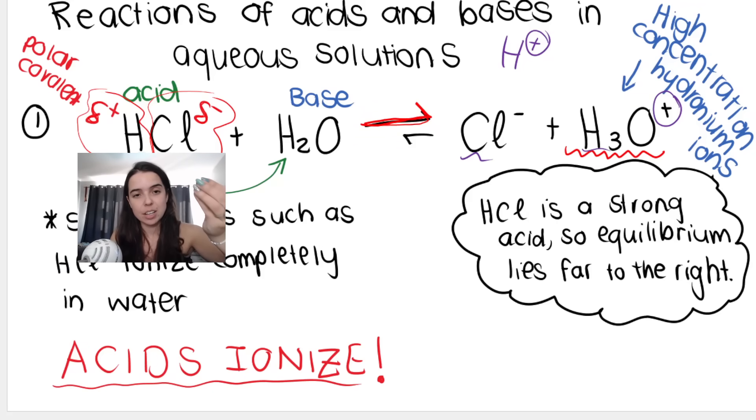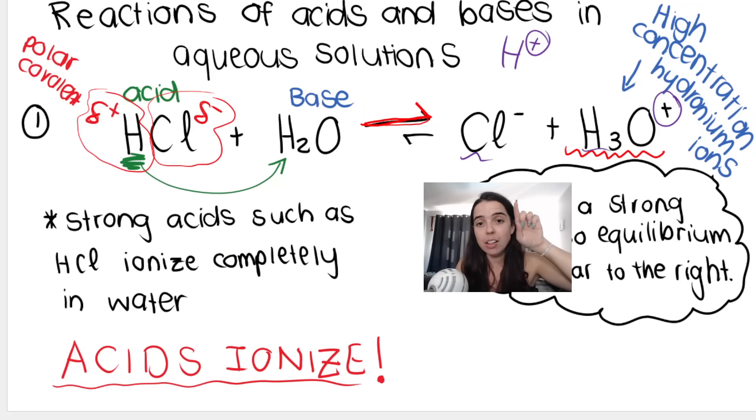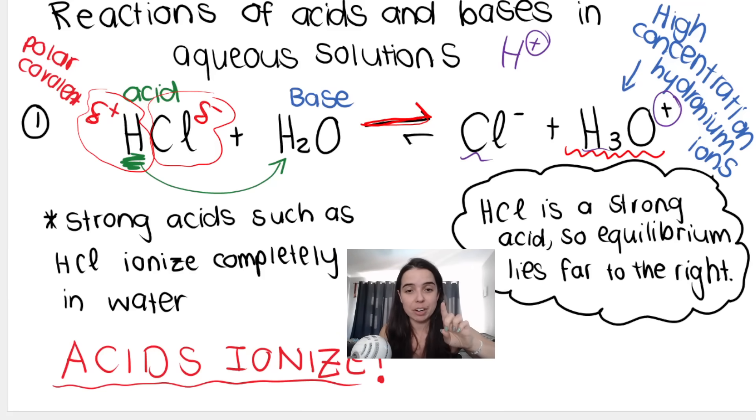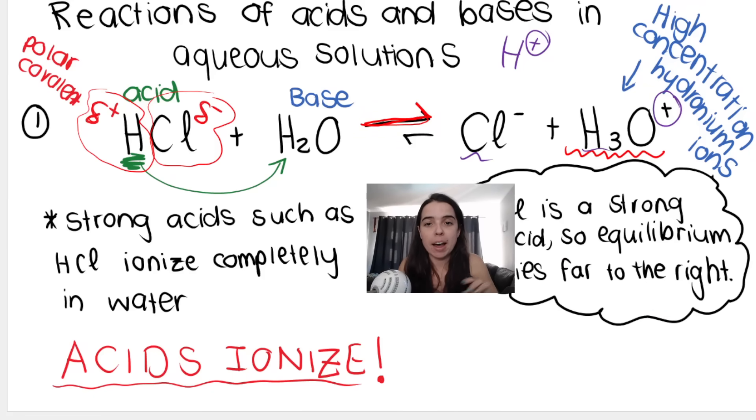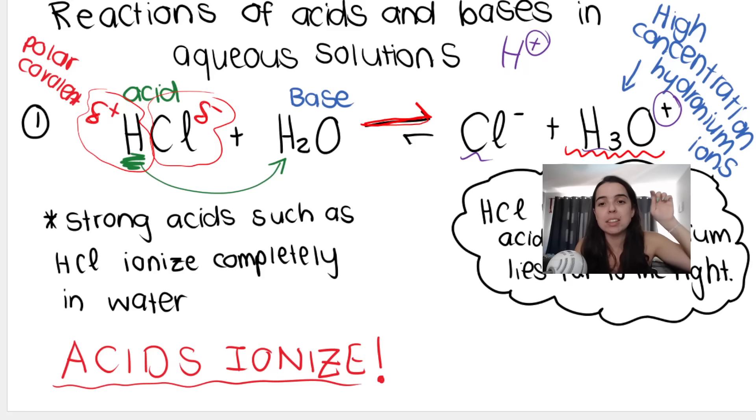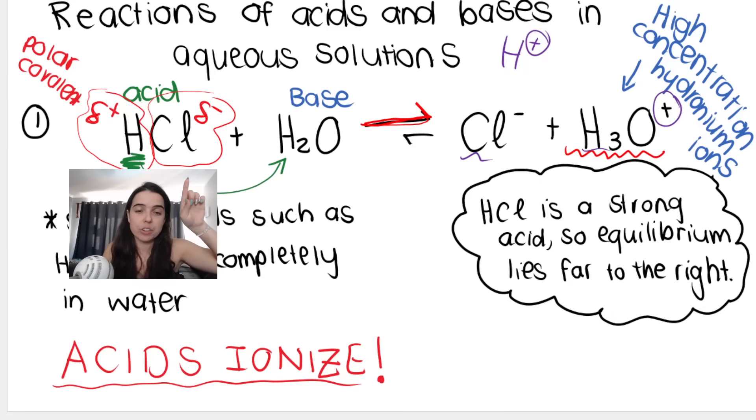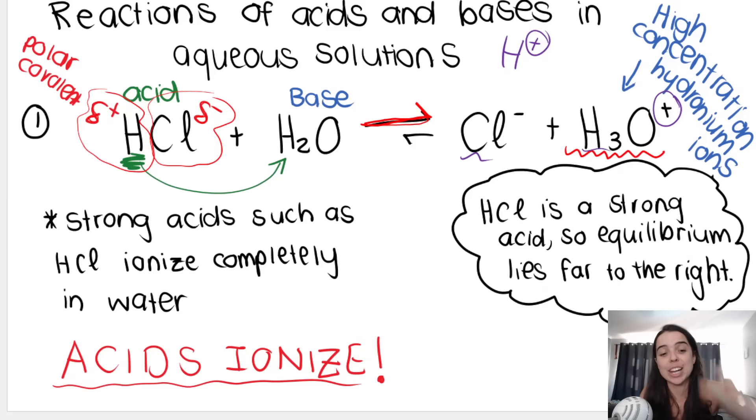It was HCl but now lost a proton, lost an H+, so it's no longer HCl but just Cl, and it's minus because it lost a plus. Very important - HCl is a strong acid, which means the equilibrium lies far to the right. There will be a very high concentration of hydronium ions. If I know the acid concentration, I know the hydronium ion concentration, which becomes important when calculating pH later.